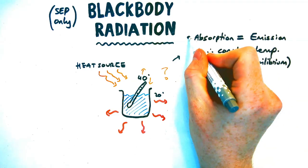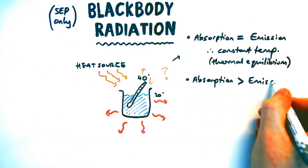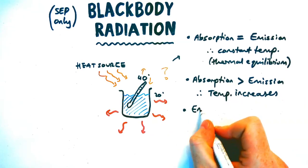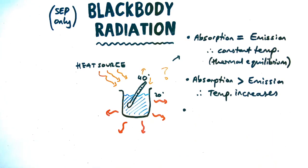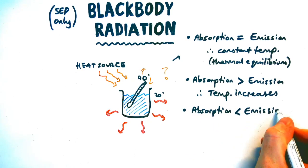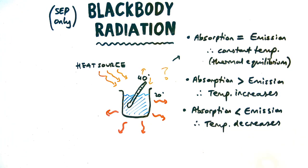If on the other hand the absorption was larger than the emission, then what would happen is that the temperature would increase. It's absorbing more heat than it's letting off, so the temperature, the kinetic energy of the particles will increase and the temperature will rise. If absorption is lower than emission, on the other hand, the temperature will decrease because it's losing energy, so the kinetic energy of the particles will go down.